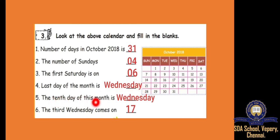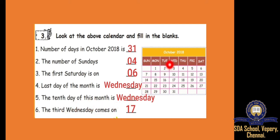The 10th day of this month is — see the 10th. The 10th day of this month is Wednesday. Next, the 3rd Wednesday comes on — 3 is 1st, 10 is 2nd, so 3rd is 17. 17. Yes.